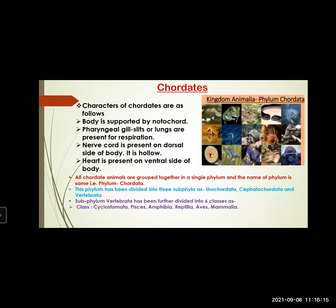Similarly, the characteristics of chordates are: body is supported by notochord — notochord is present. Pharyngeal gill slits or lungs are present for respiration. Nerve cord is present on the dorsal side and it is hollow. Heart is present on the ventral side. All chordate animals are grouped together in a single phylum — phylum Chordata. This phylum has been divided into three subphylums: Urochordata, Cephalochordata, and Vertebrata.